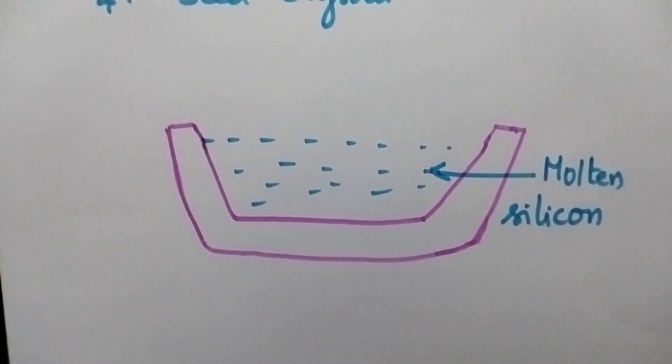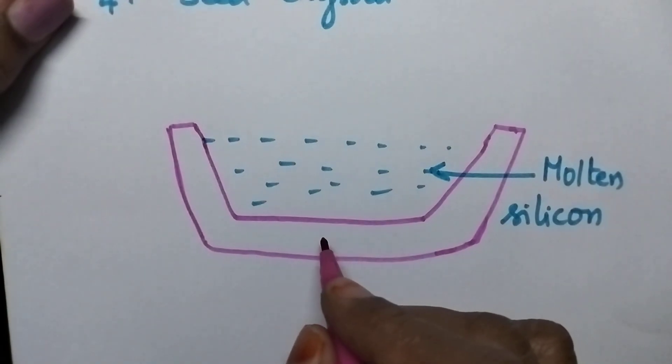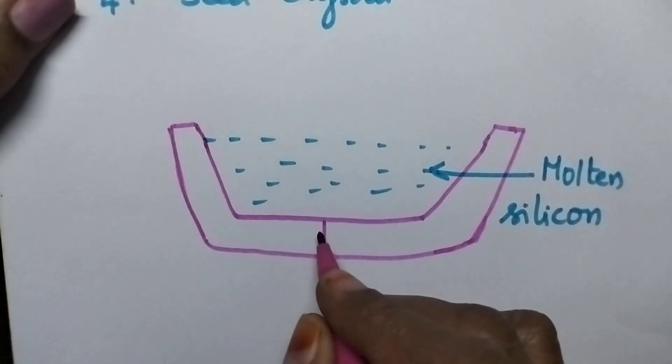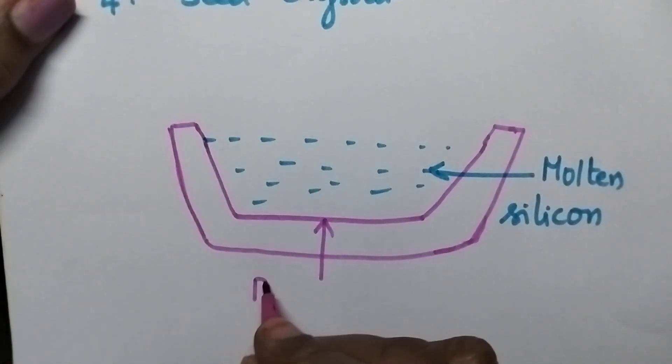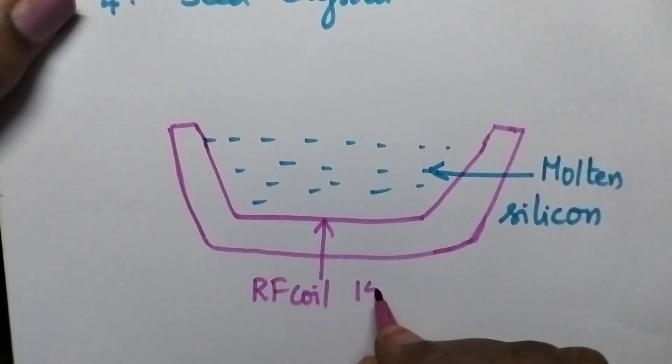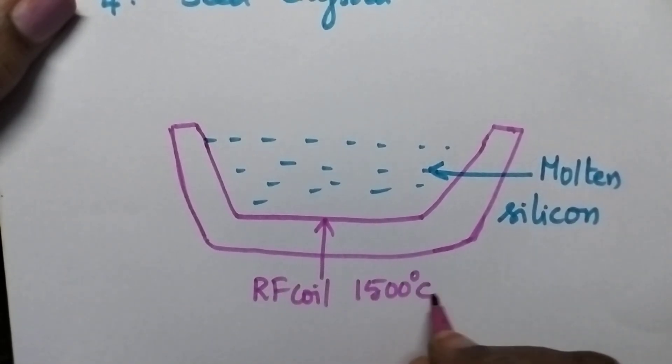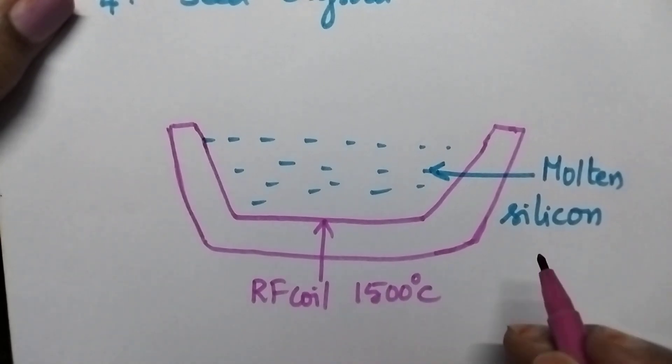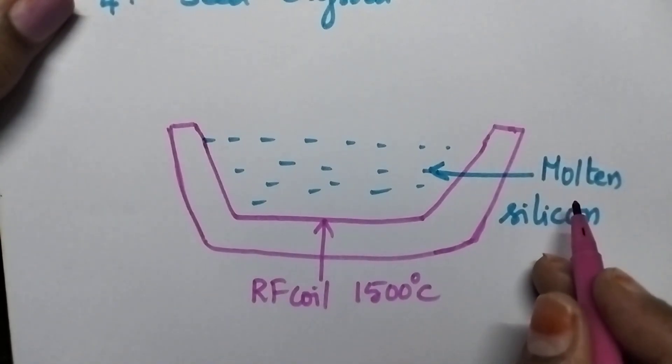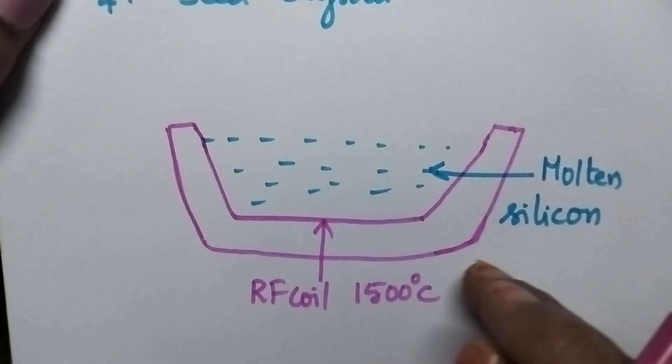Whenever this crucible is heated to very high temperature, that is 1500 degree centigrade with the help of RF coil, the silicon will be present in the molten state and it is supported with rotating shaft.